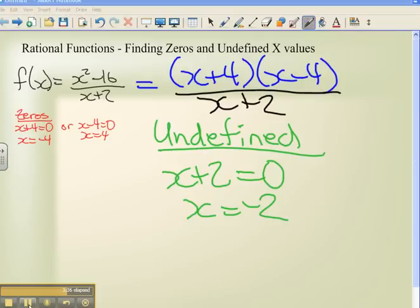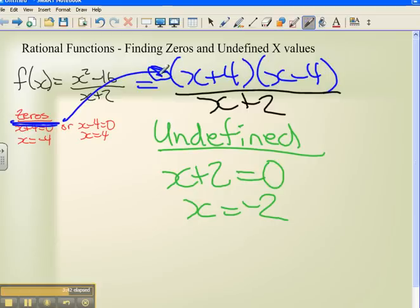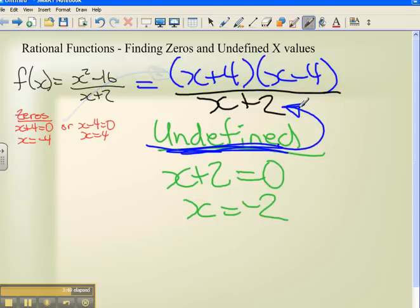So once again, for the zeros, we look at the numerator, that's the top. For the undefined, we look at the bottom, the denominator. Set them both to zero. We can have a zero on the top, we can't have a zero on the bottom. That's all you need to know for finding zeros and undefined values.